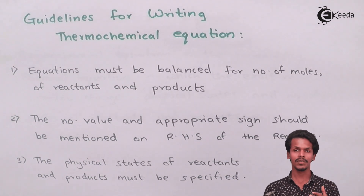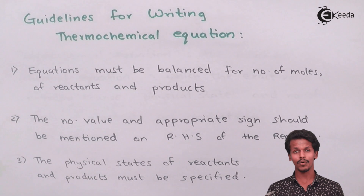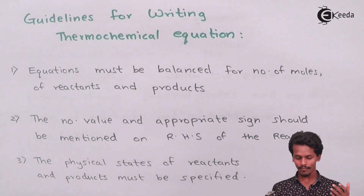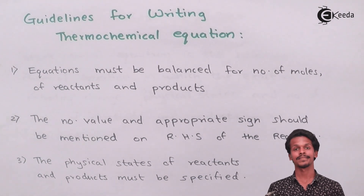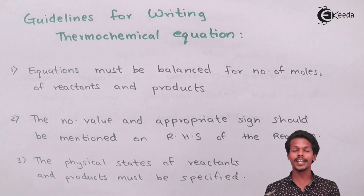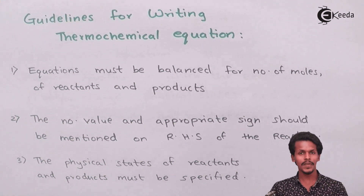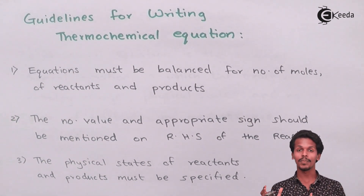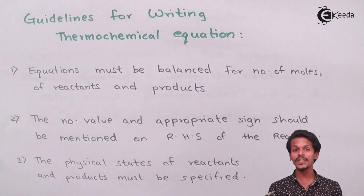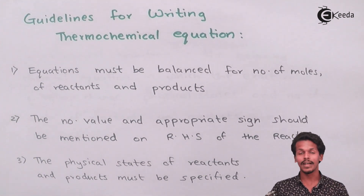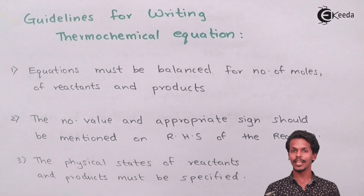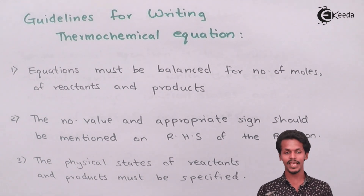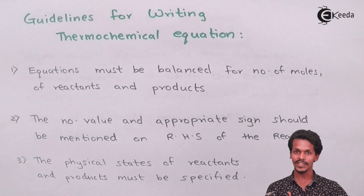Guideline three: the physical state of every reactant and product must be specified — that is, solid, liquid, or gas. We always specify the state for each reactant and product. This criterion must also be satisfied when representing a thermochemical equation. So those are three guidelines, but there are more to discuss.